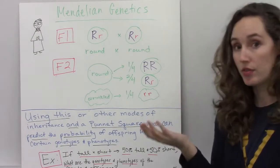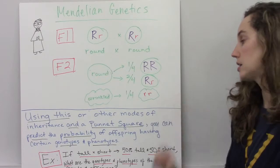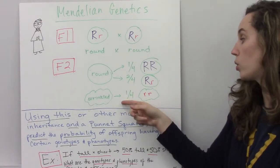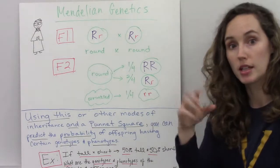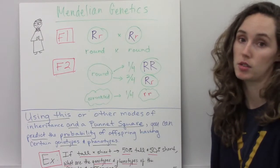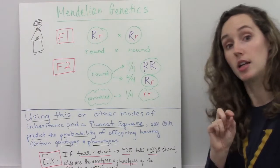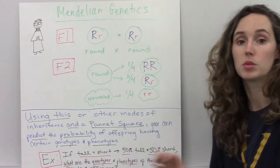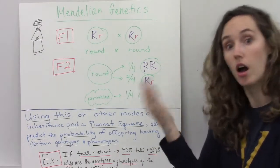And half of them, two quarters, will be heterozygous. And then again, you have that extra quarter that will be wrinkly, in our case, a homozygous recessive. It's great because you can use these concepts and concepts related to other modes of inheritance, along with a tool called a Punnett Square.